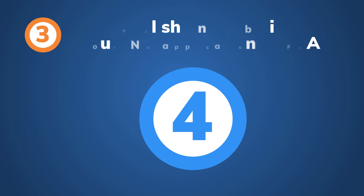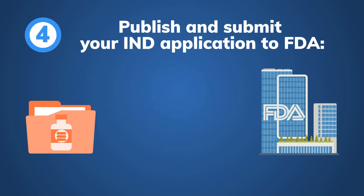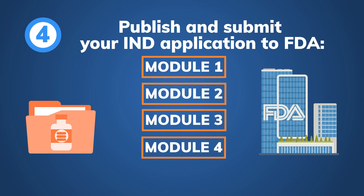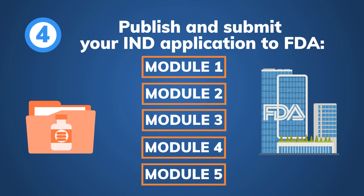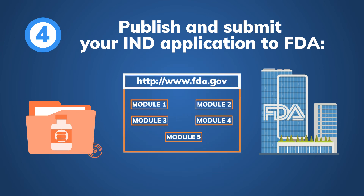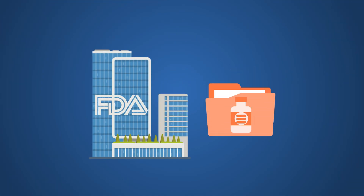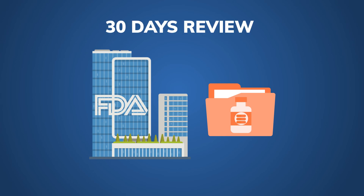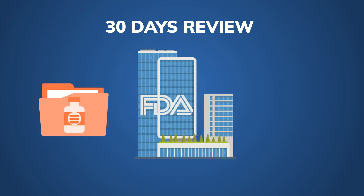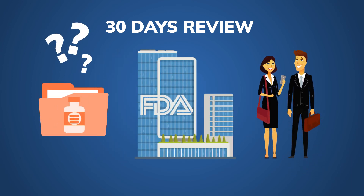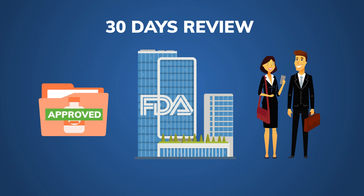Step 4: Publish and submit your IND application to FDA. Once all modules are prepared and reviewed, the GRP operations team will publish it and submit it electronically to FDA. After submission, it takes FDA 30 days to review an IND application. In case FDA has any queries regarding your IND, our team will respond in time so you can obtain the IND approval successfully within 30 days.